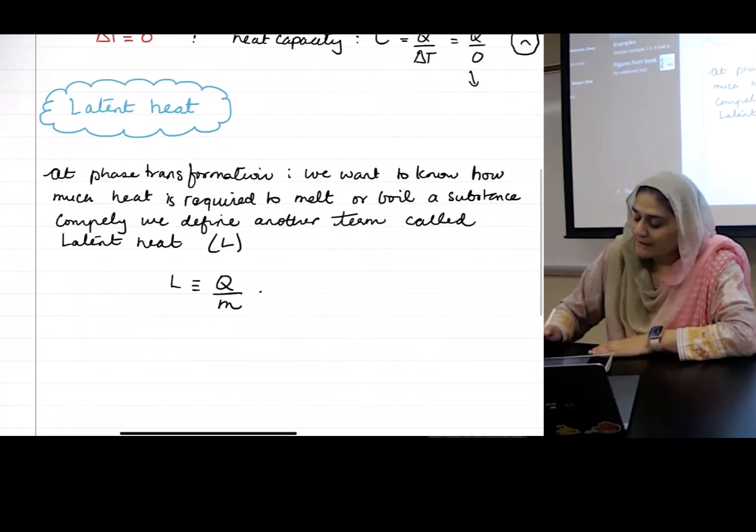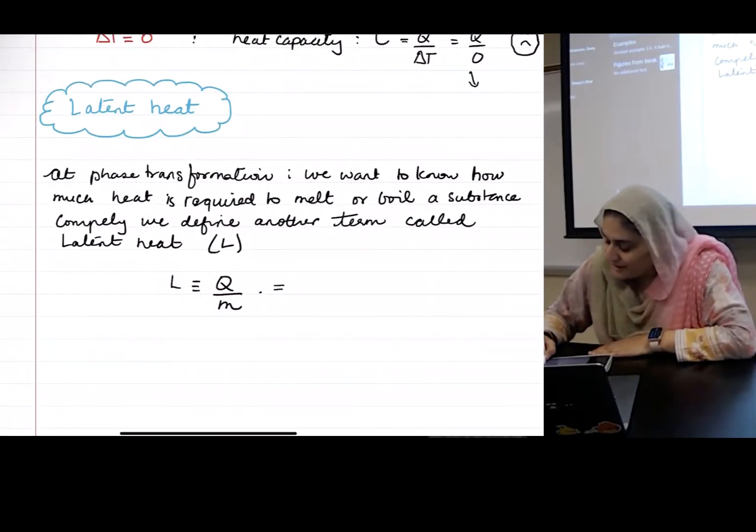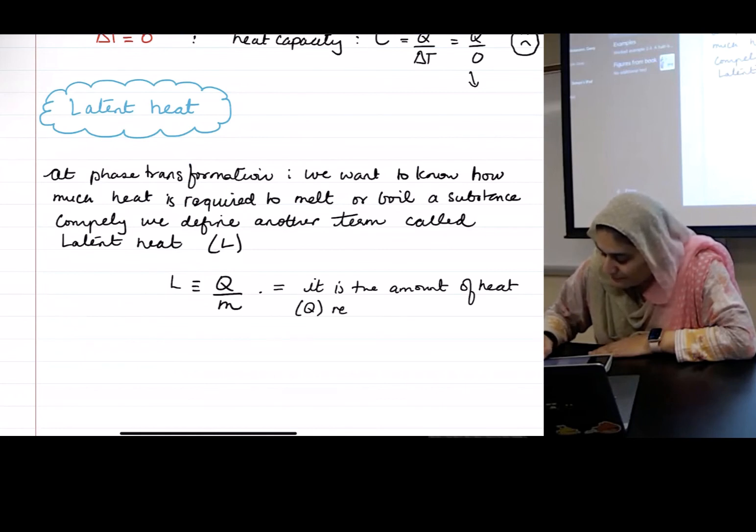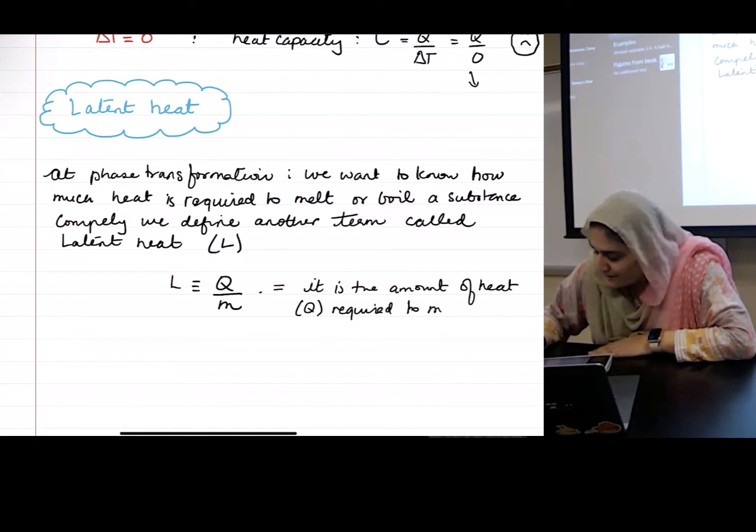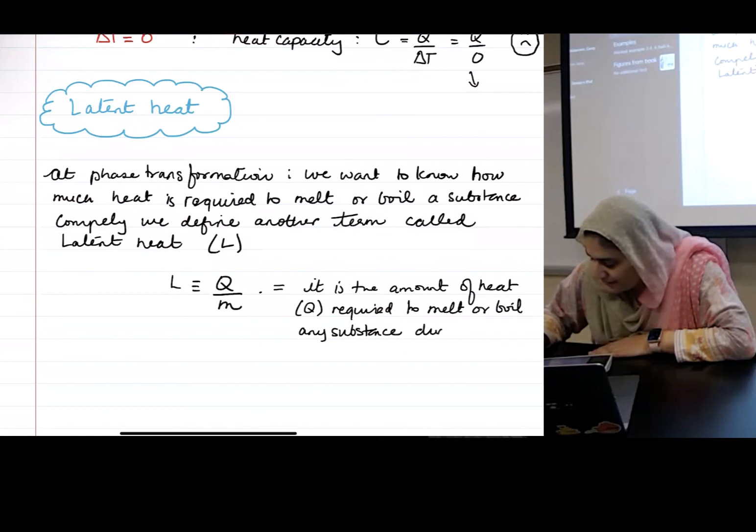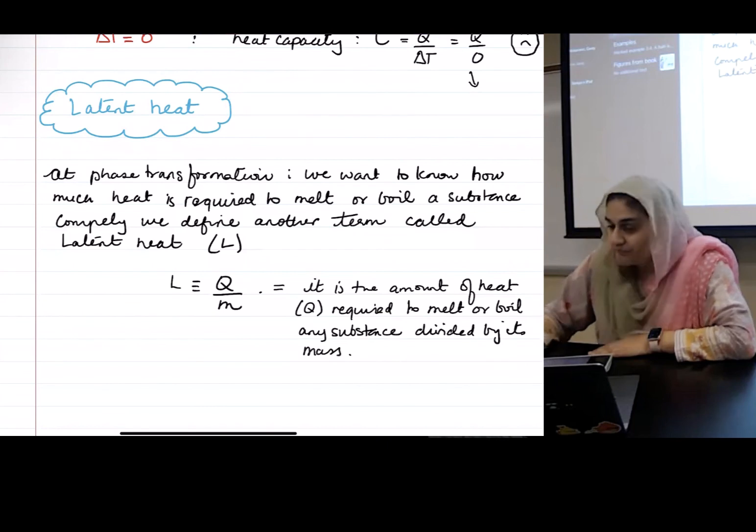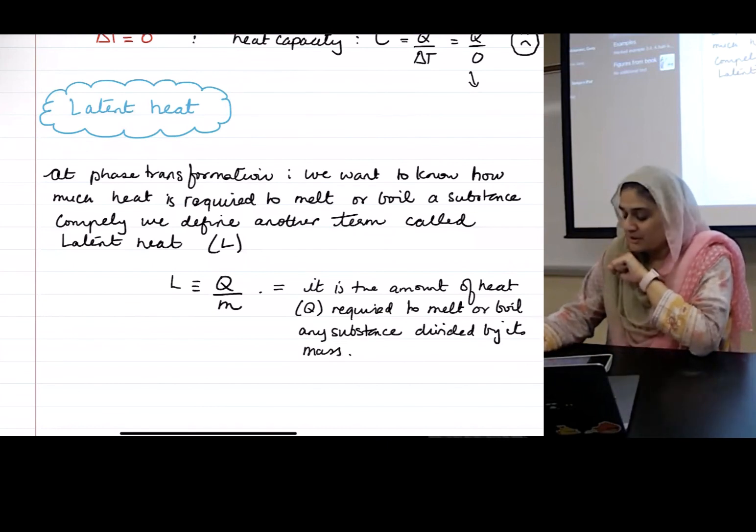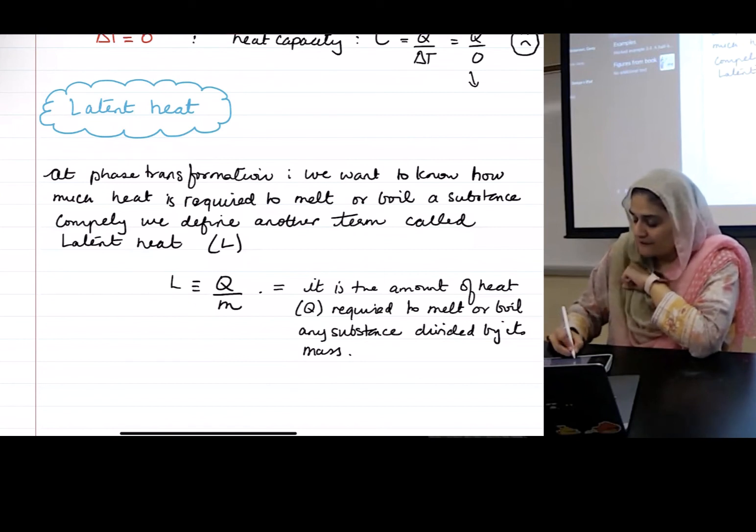And in English we say that it is the amount of heat Q required to melt or boil any substance divided by its mass, and in most textbooks it's also known as latent heat of transformation.